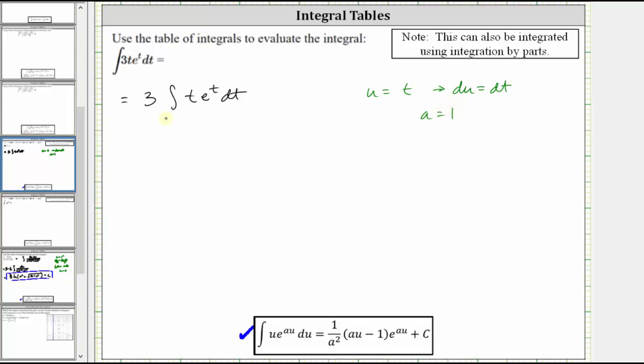And now let's go ahead and write the integral in terms of u and a. We have three times the integral, t is equal to u, and then we have e to the power of t, which is equal to e to the power of au, since a is one, and dt is equal to du. And so notice how it does fit the formula perfectly.